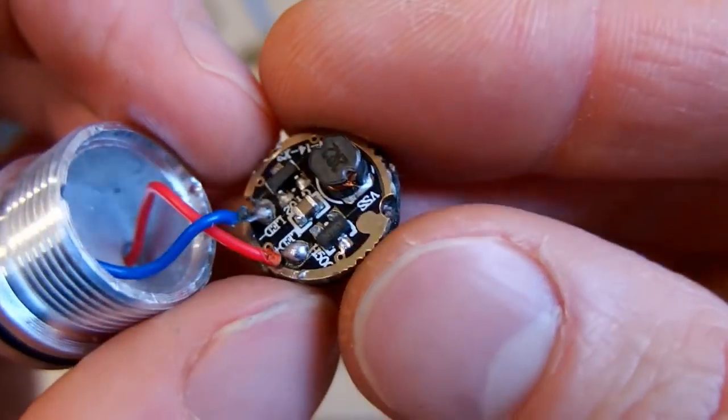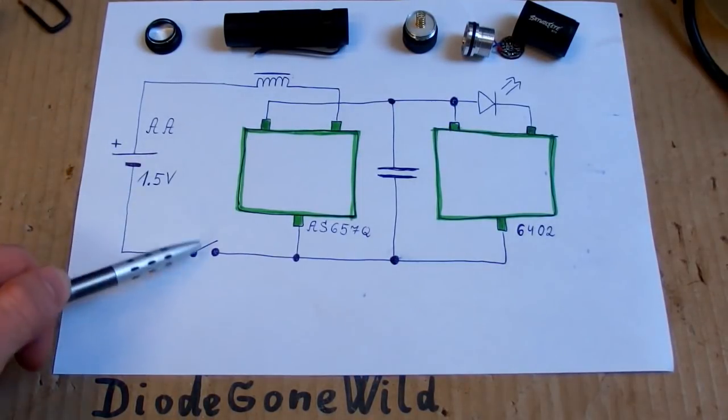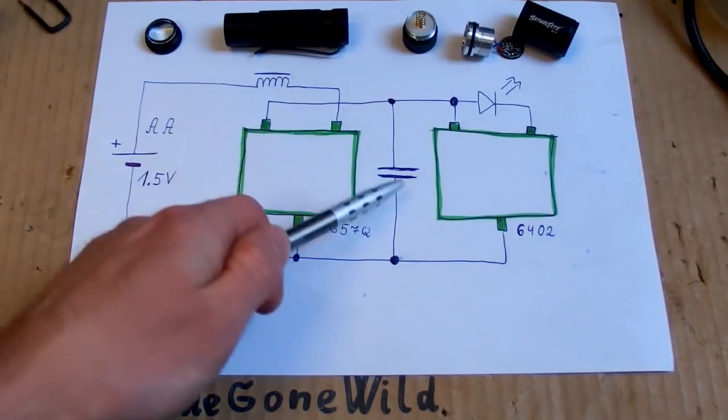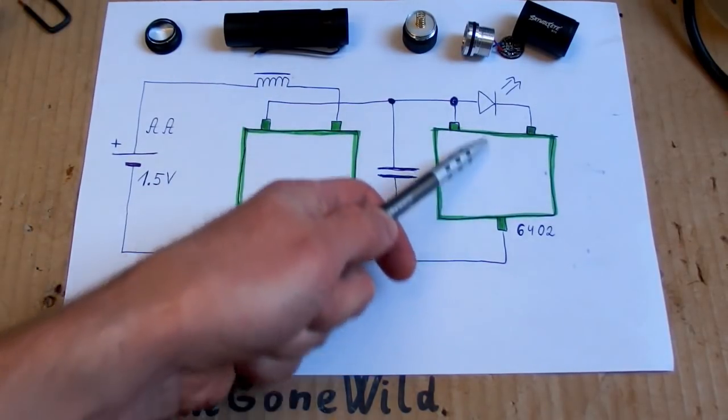Now let's try to reverse engineer the schematic of this board. Here is the schematic of it, which is quite simple. Here is the battery, the switch, the inductor, the capacitor, the two three-pin chips, and the LED.